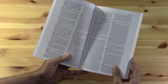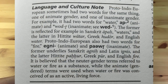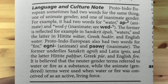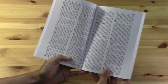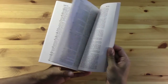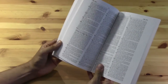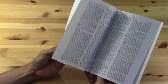Interspersed in the dictionary are language and culture notes, separated out — as you can see in this example here — by horizontal bars, which give a bit more discussion of what we might be able to tell about the language or the culture of the Indo-Europeans on the basis of any given root. Just a little more discursive information in these sections, and there seem to be quite a few of them.